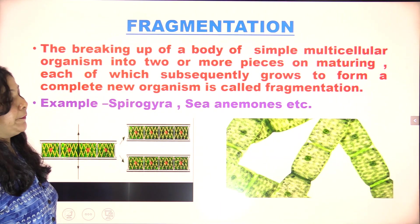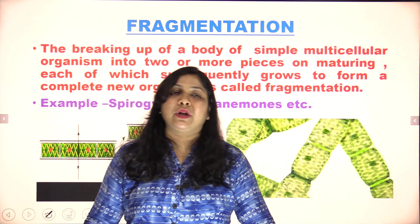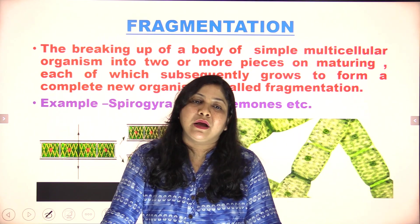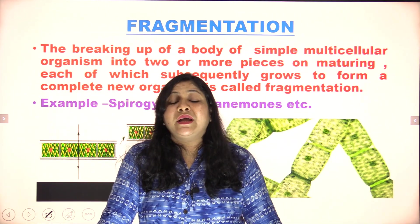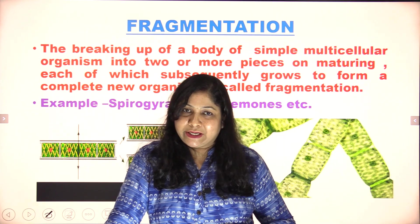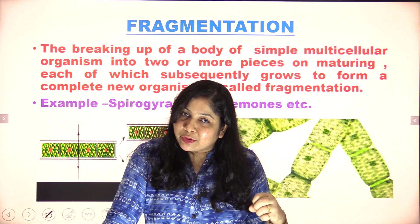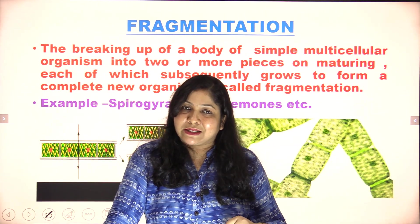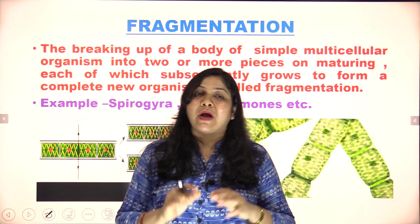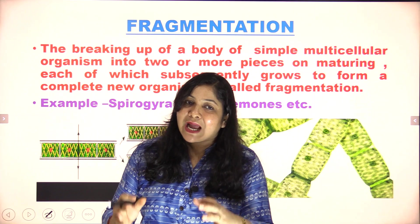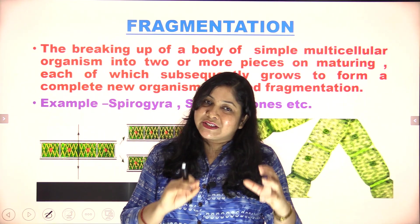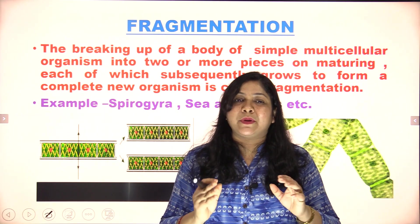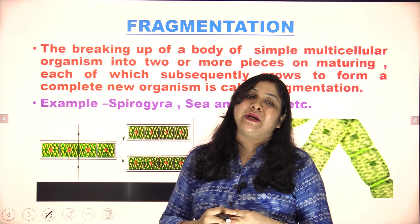Next is fragmentation. There are unicellular and multicellular organisms. Unicellular organisms generally use the fission process for reproduction. In multicellular organisms, if the body design is simple — that is, at the cellular level — there is no cell differentiation. One cell is sufficient for all functions and all life processes.